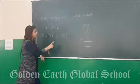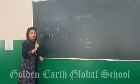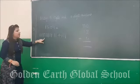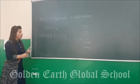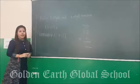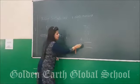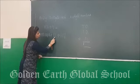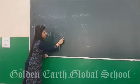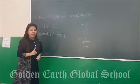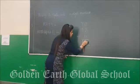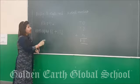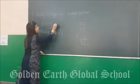Then put the plus sign. Next we have 4, so draw 4 lines: 1, 2, 3, 4. Now this is a bundle of 10 — 1 bundle of 10. So write down 1 under 10's. Now check how many loose. Let's count: 1, 2, 3, 4, 5, 6, 7. So write down 7 under 1's. 13 plus 4 is equal to 17.